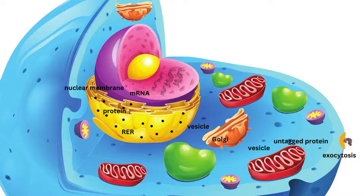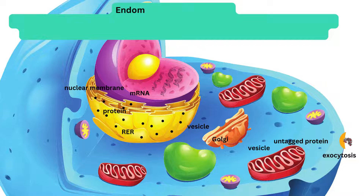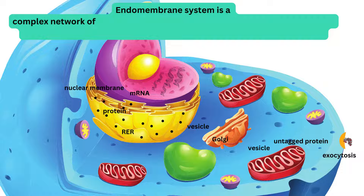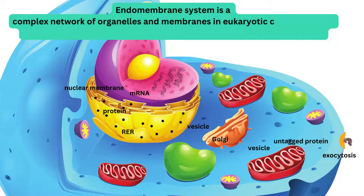Now let me define the endomembrane system. It is a complex network of organelles and membranes in eukaryotic cells that works together to produce, modify, package, and transport lipids and proteins.